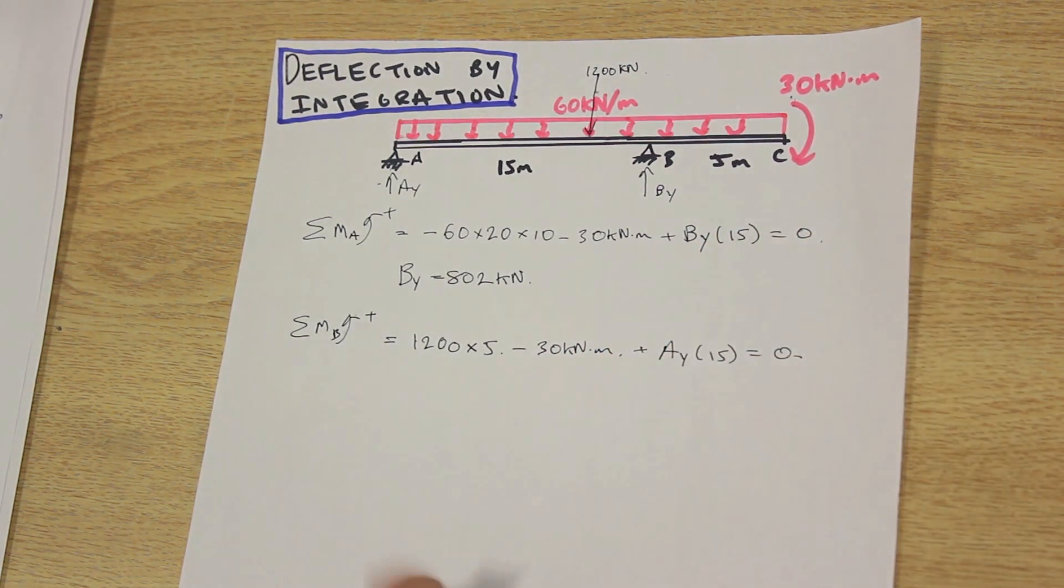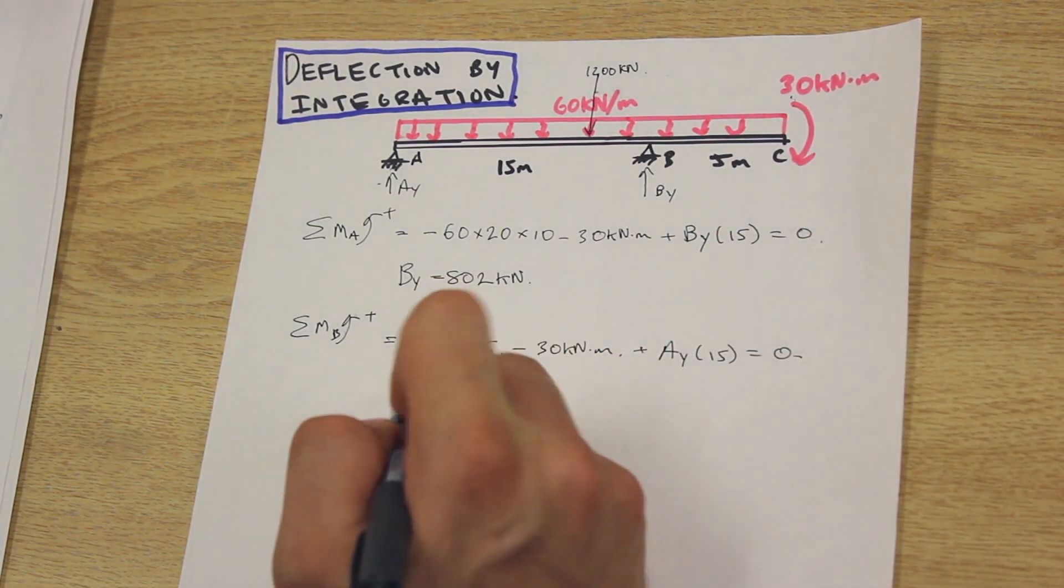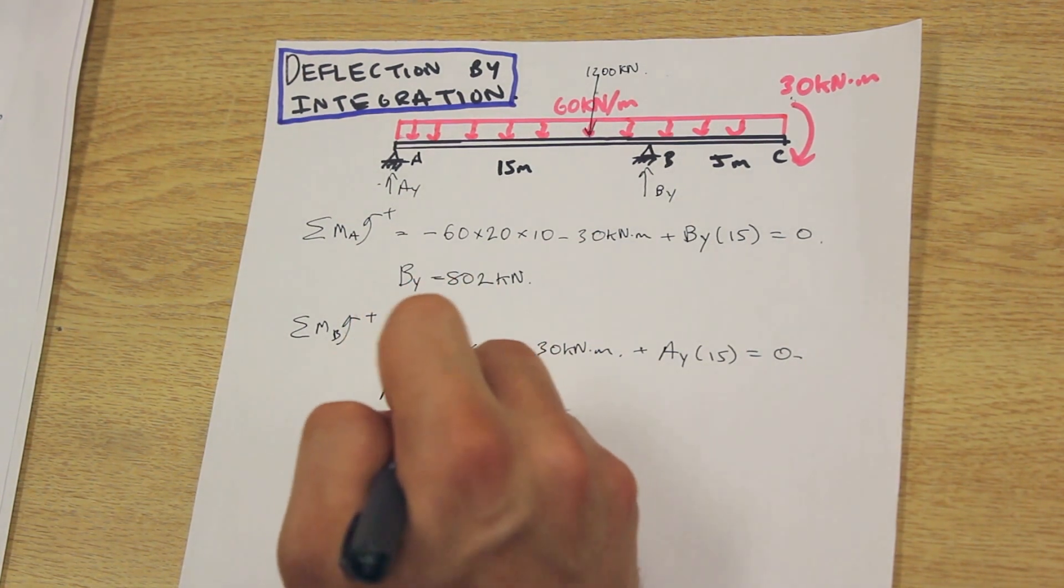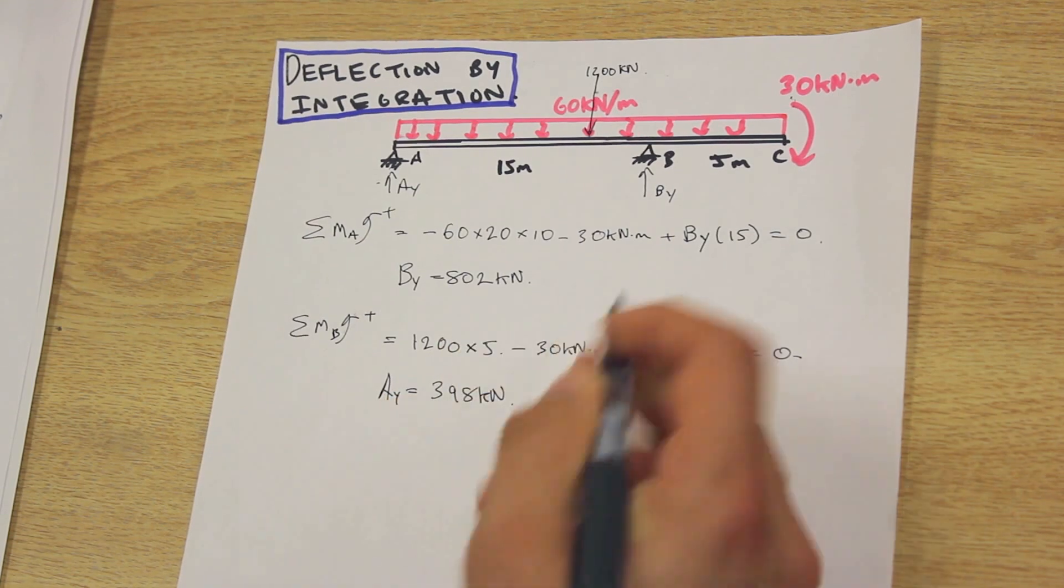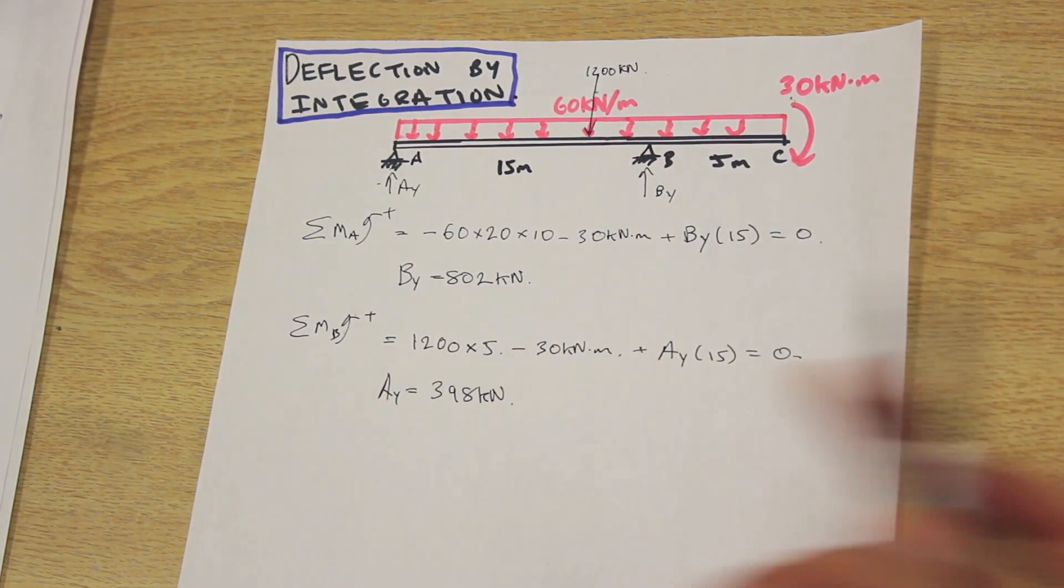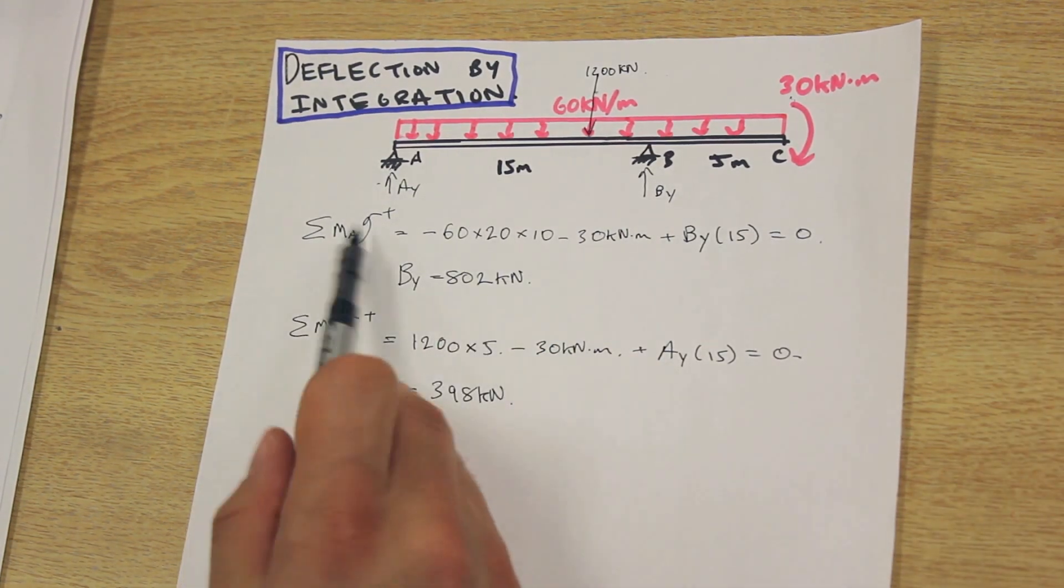If we calculate that out, we're going to get that Ay is equal to 398 kilonewtons. The reason—I've mentioned this in previous videos—why we didn't take the summation of the forces in the y-axis after finding the moment at A is that we don't know if our answer is correct when we do that.